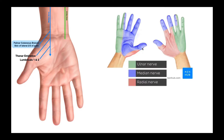Forget about the digits for a second. If you look at this region that I'm tracing out with my mouse, this region is the area of the hand that's innervated by the palmar cutaneous branch of the median nerve — it provides that sensory information. The second branch is that which goes to the thenar eminence, and this is sometimes referred to as the recurrent branch of the median nerve.